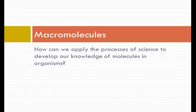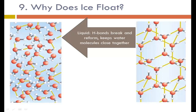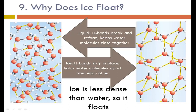The next set of questions is about macromolecules. First: why does ice float? In liquid water, hydrogen bonds are constantly breaking and reforming, holding water molecules close together. As water cools into a solid, the hydrogen bonds stay in place and hold the water molecules farther apart from each other. This makes ice less dense than liquid water, so it floats.